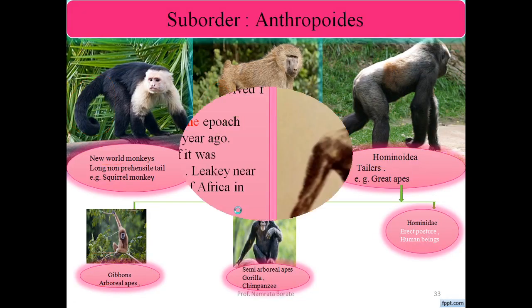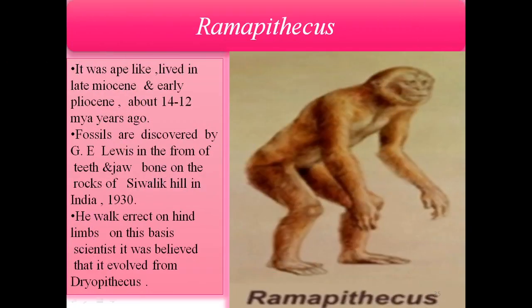The second one is Ramapithecus. It was an ape-like primate that lived in the late Miocene and early Pliocene epoch, around 12 to 14 million years ago. The fossils were discovered by G.E. Lewis in the form of teeth and jaw bones in the Shivalik Hills in India. It walked erect on hind limbs, and scientists believe it evolved from Dryopithecus.